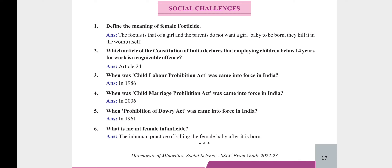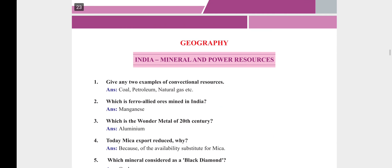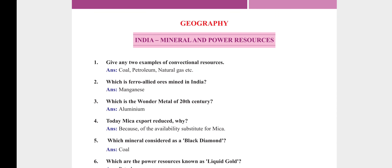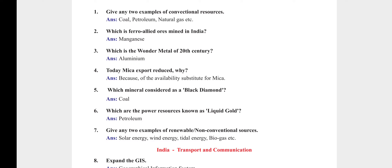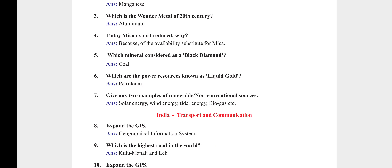Geography — India's Mineral and Power Resources. Give two examples of conventional resources: coal, petroleum, and natural gas. Which ferro-alloy ore is mined in India? Manganese. Which is the wonder metal of the 20th century? Aluminium. Why has mica export reduced? Because of the availability of substitutes for mica. Which mineral is considered the black diamond? Coal.